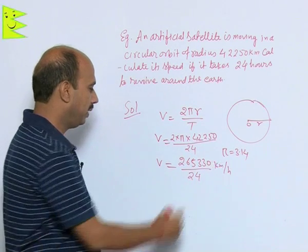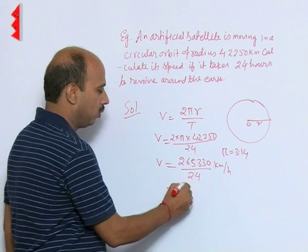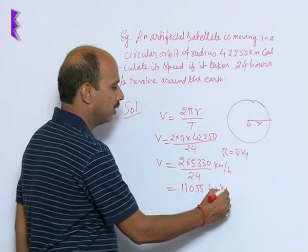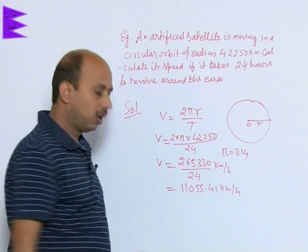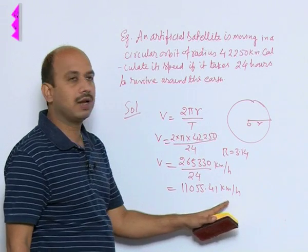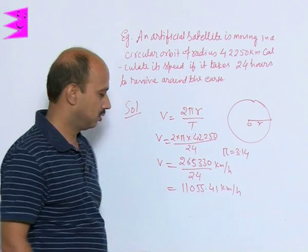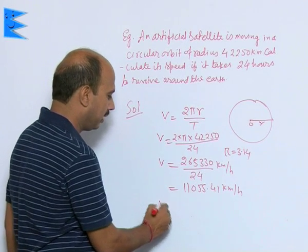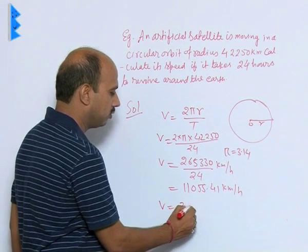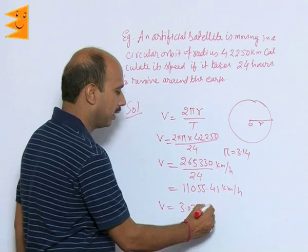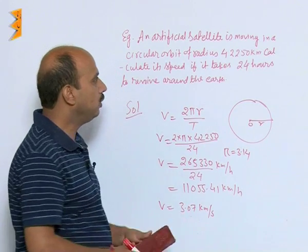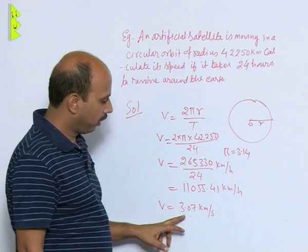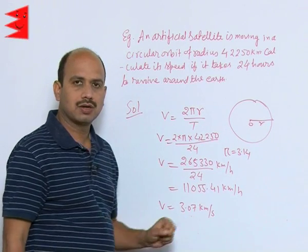If you solve it, you will get 11,055.41 kilometers per hour. Now we can convert this kilometers per hour into meters per second by dividing by 3600, so we get V = 3.07 kilometers per second. So the speed of the satellite in its orbit is 3.07 kilometers per second.